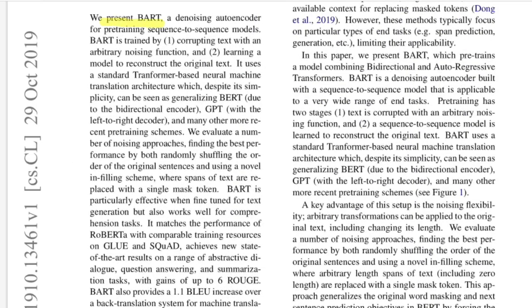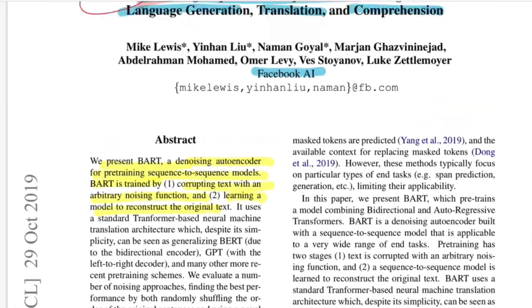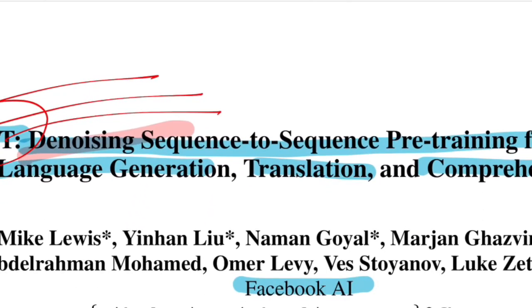We present BART, a Denoising Auto-Encoder for pre-training sequence-to-sequence models. BART is trained by corrupting the text with some arbitrary noise function and learning to reconstruct the original text. Let me tell you about how Denoising Auto-Encoder works.